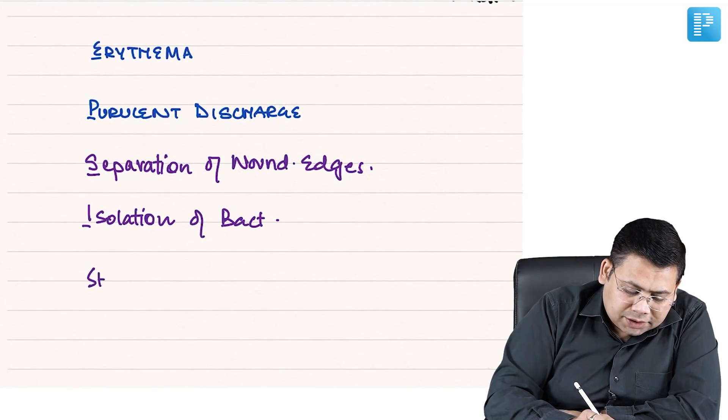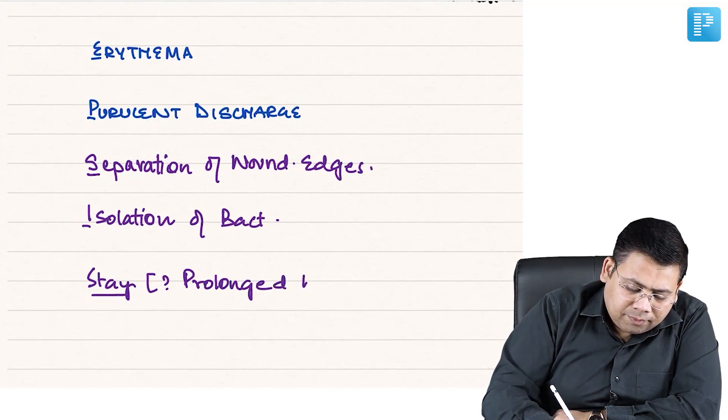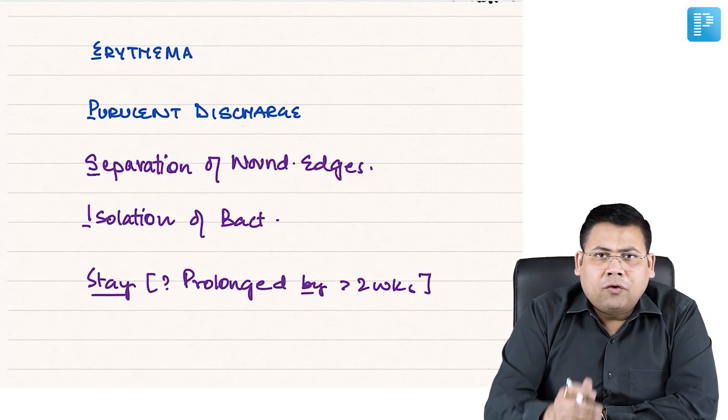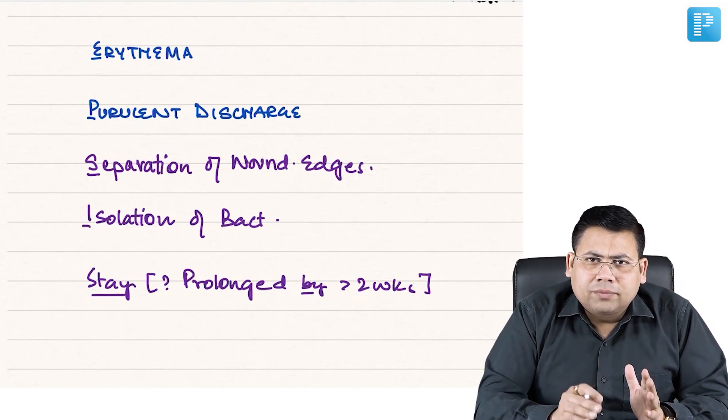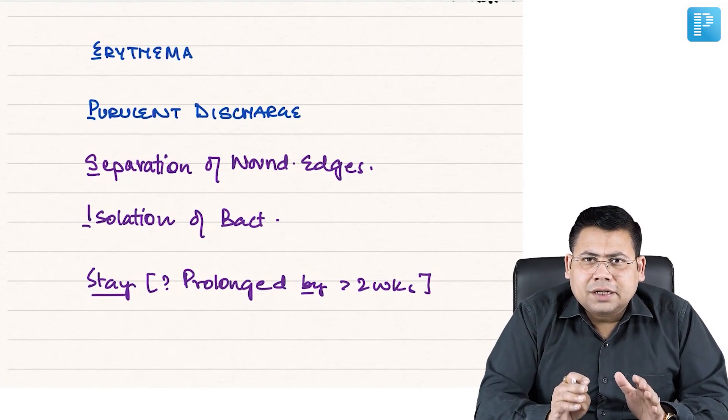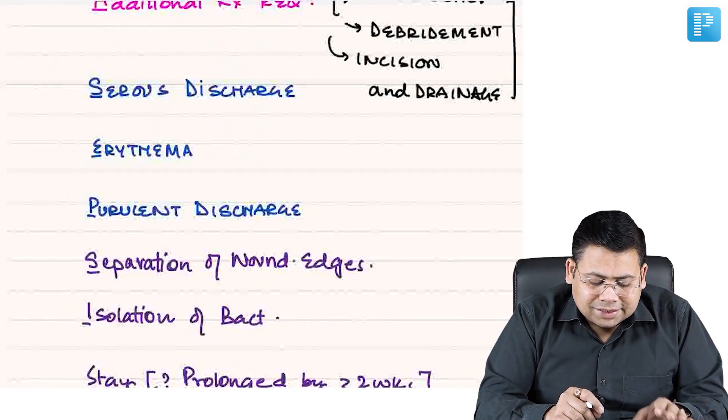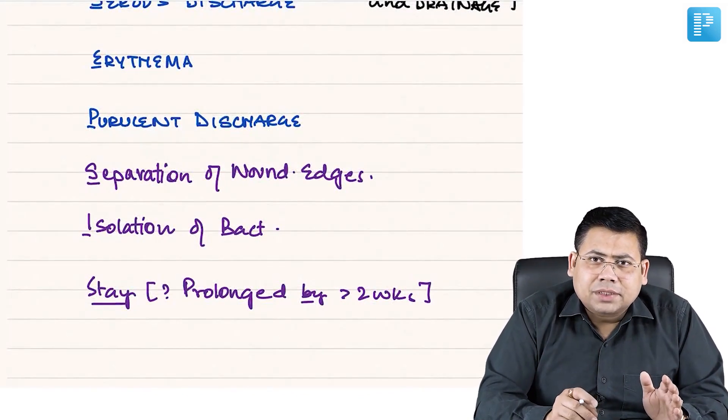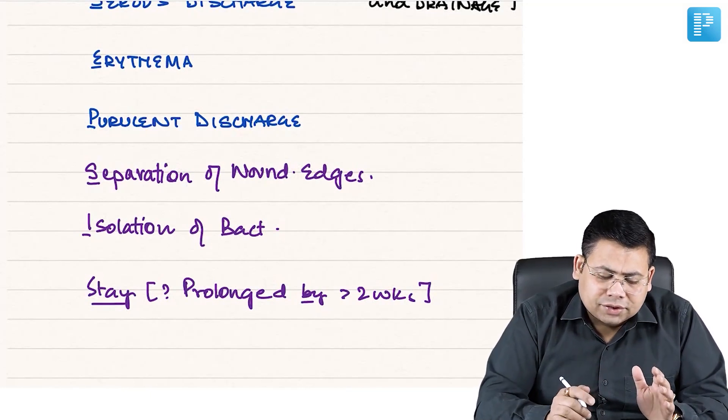Last S is stay. The stay is prolonged by more than two weeks. If for the conventional management of the patient, you had to keep the patient in the hospital for a longer time, this is considered as prolonged hospital stay. So all these points - A-S-E-P-S-I-S - ASEPSIS, these are actually a point-based calculation system.